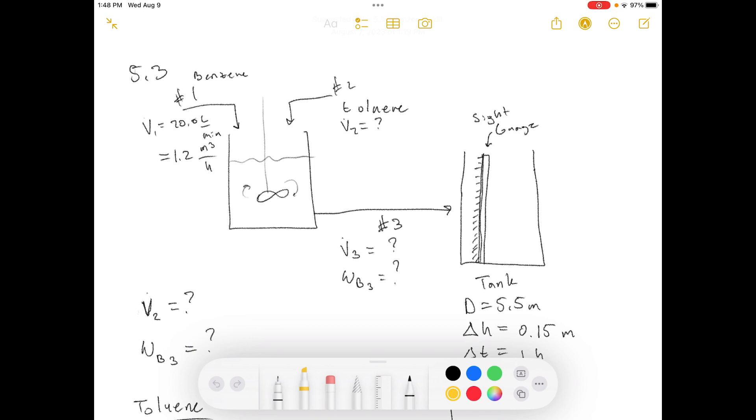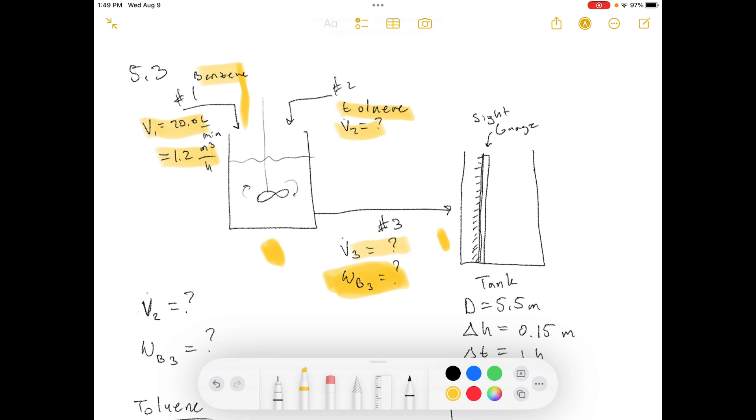Calculate the flow rate of toluene into the blender in liters per minute and the composition of the tank contents in weight percent benzene. So, we've got benzene going into the tank here. It's at this volumetric flow rate, which is equal to this in meters per hour. Then we've got our toluene. We don't know what the volumetric flow rate is, but they want us to figure it out. Then we've got stream three here that comes out of this mixing tank and goes into this storage tank. They want us to know what the weight percent of benzene is in this stream because that will be what it is in this tank.